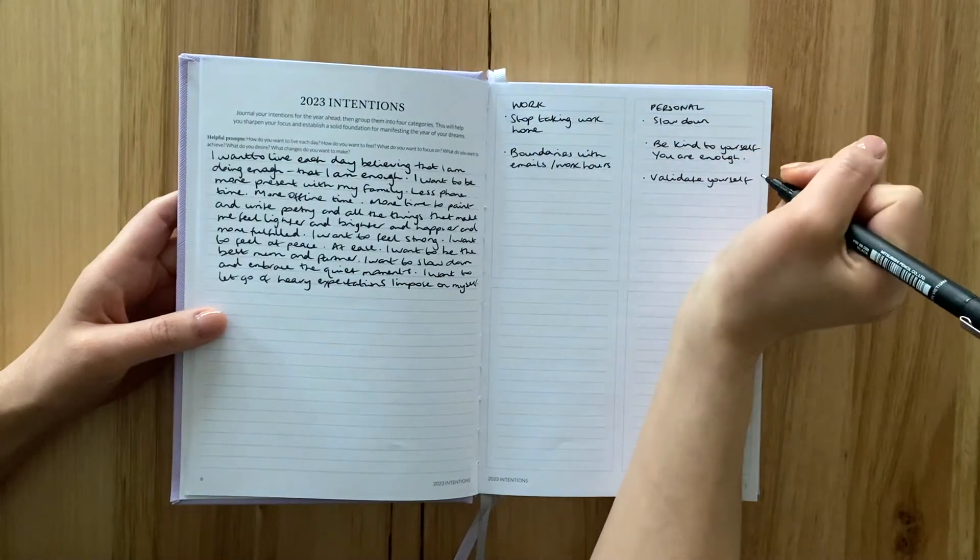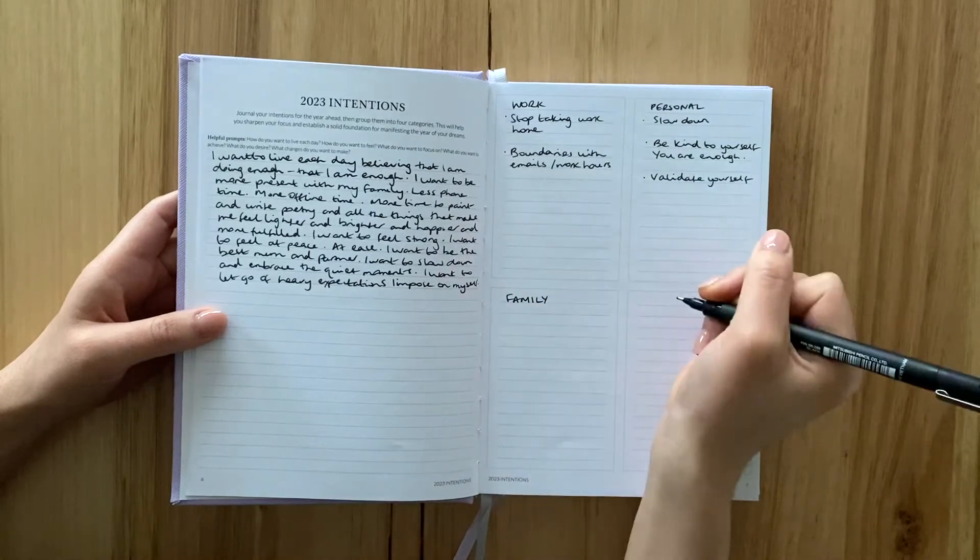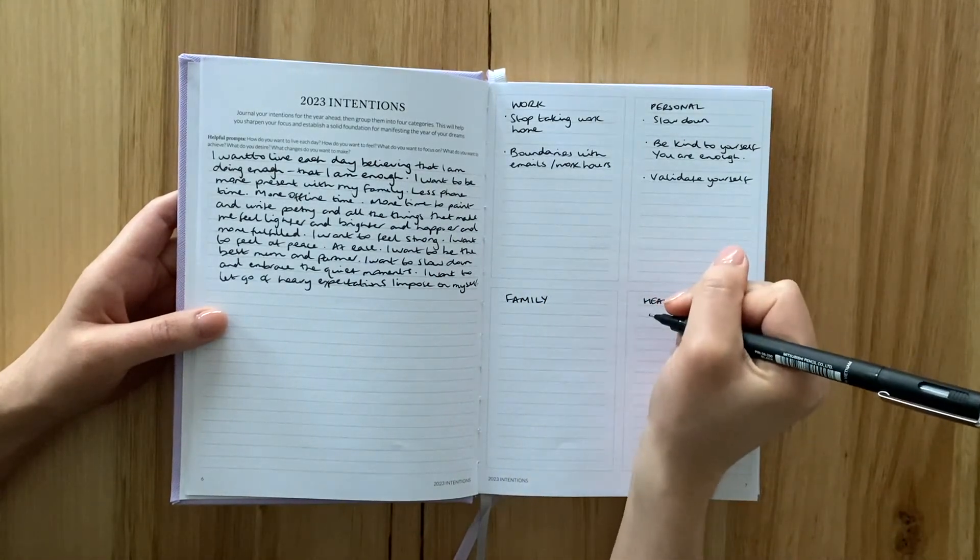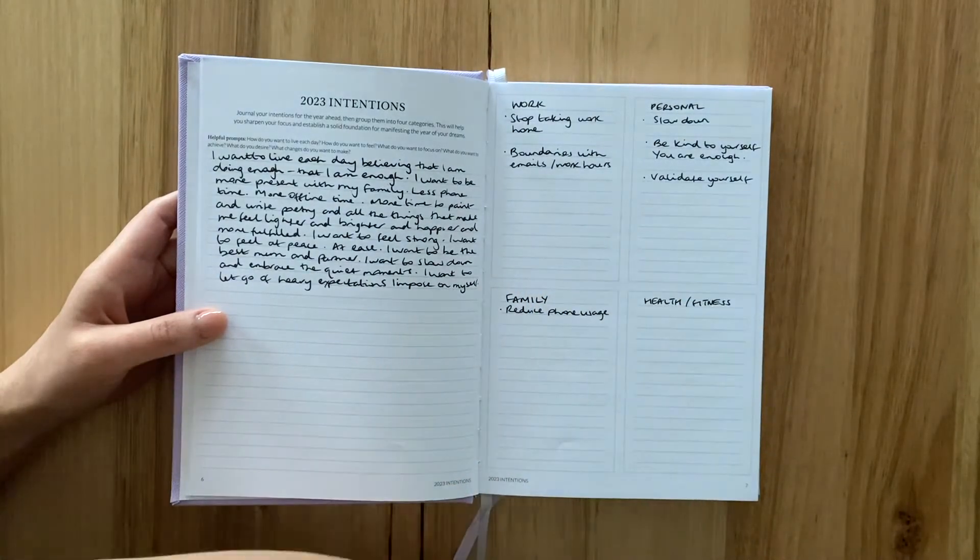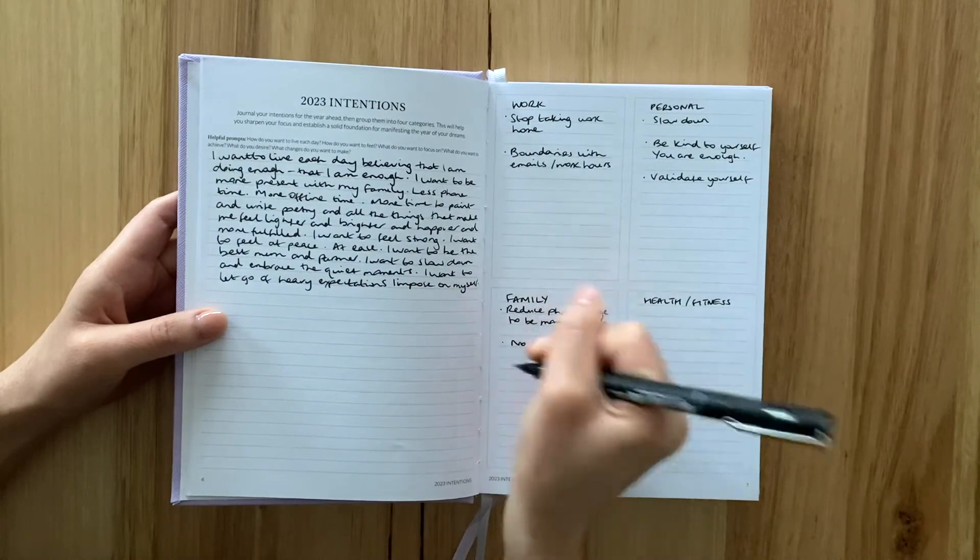You'll probably have intentions that spread across more than four categories, but having those four boxes encourages you to focus on a few core areas. If you are itching for more than four categories, you also have the option to halve each box and use each box for two categories.